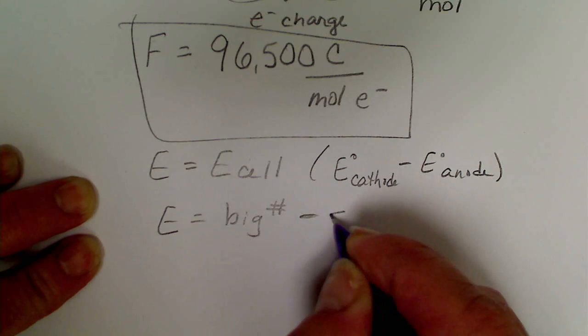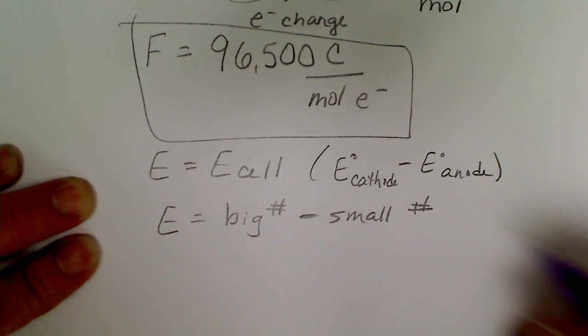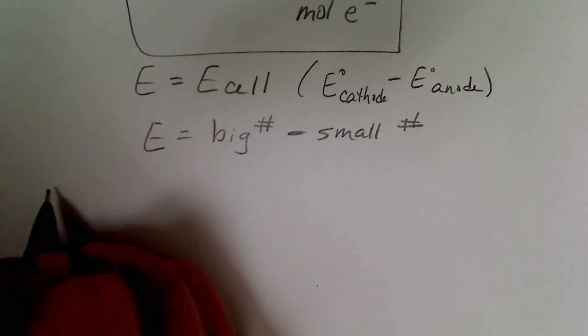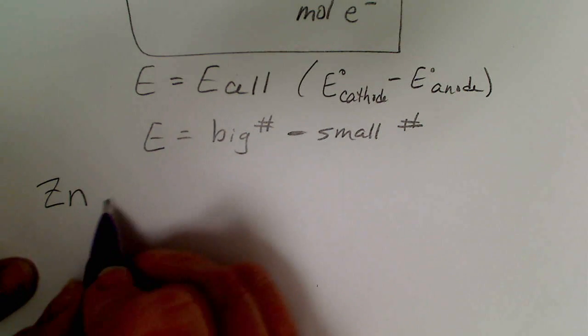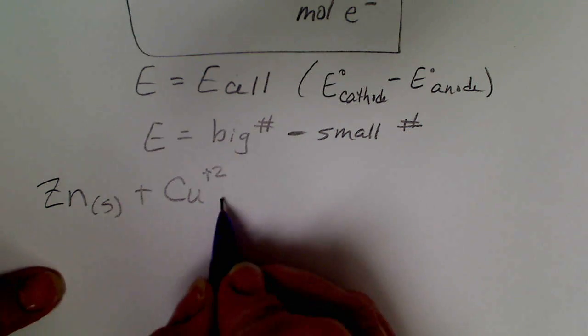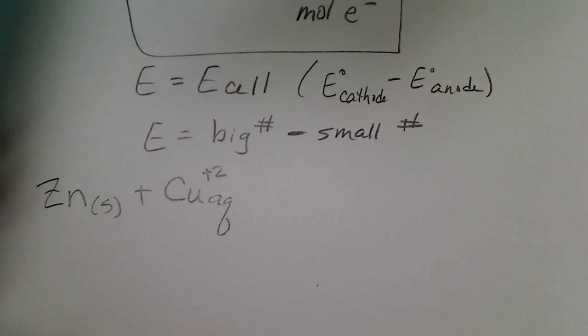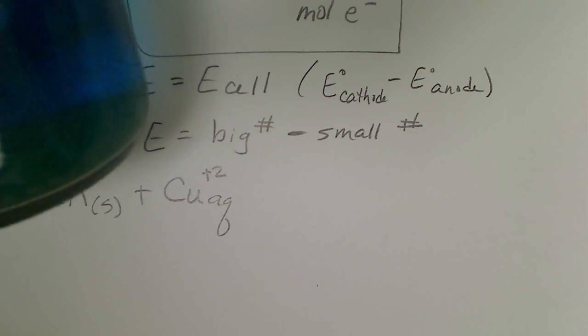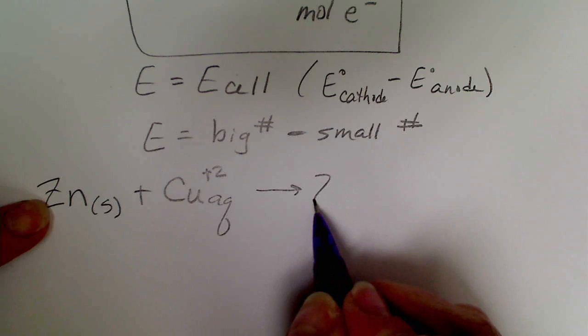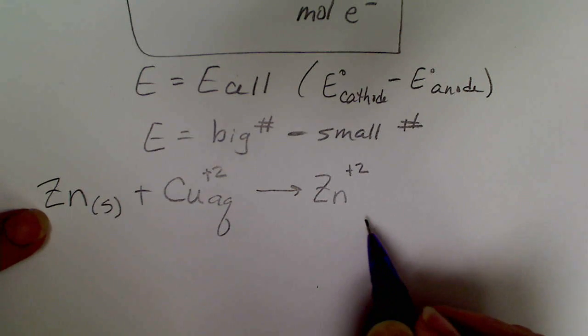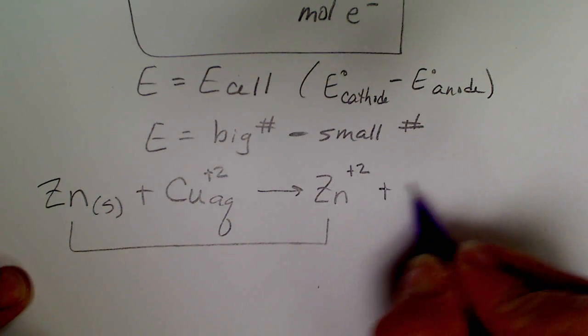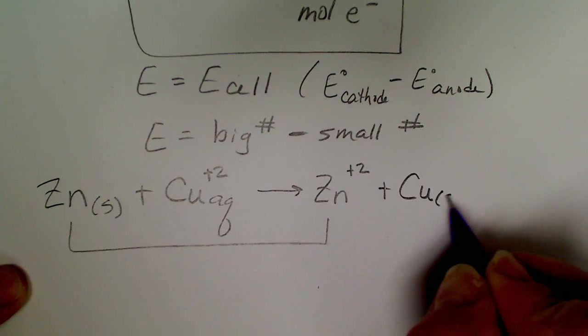E cathode minus E anode, this is that value that we've been calculating. The math trick for that is the big number minus the small number. If we go back and look at our chemical reaction with zinc, we had zinc solid in the presence of copper ion in solution.